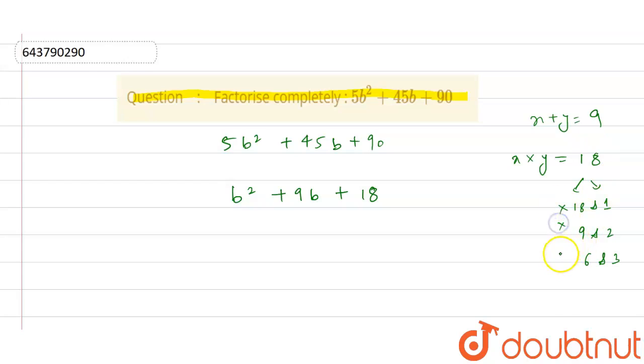So these are not the factors. This is the factor, but we want all the terms to be positive. So that means 6 is also positive and 3 is also positive. So 6 plus 3 is 9 and 6 multiplied by 3 is also 18. So we get our factors.